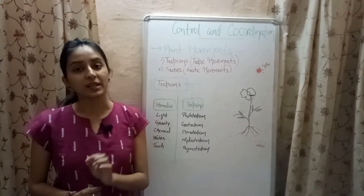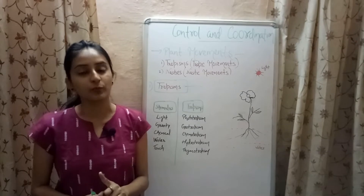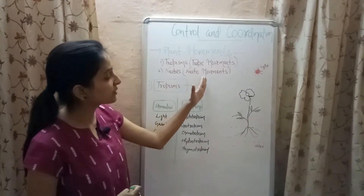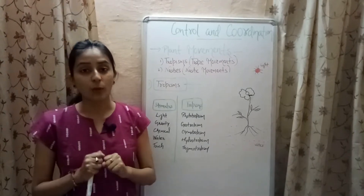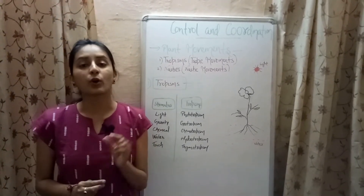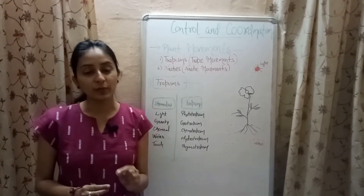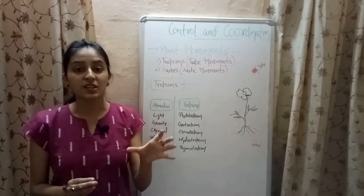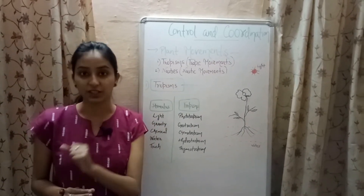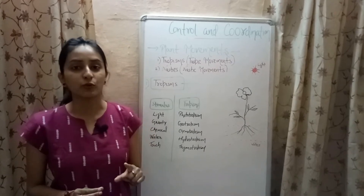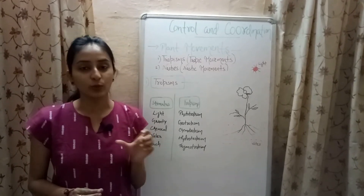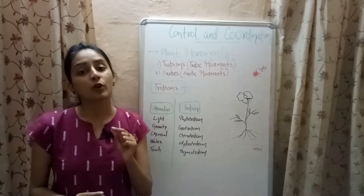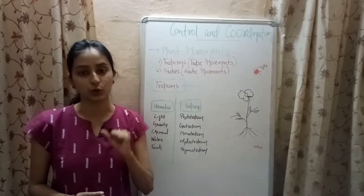Tropism, also known as tropic movement, is the type of growth movement in plants in which the stimulus determines the direction of growth. Nastic movement is the type of growth movement in plants in which the stimulus is not responsible for determining the direction of plant growth.